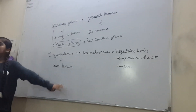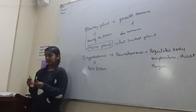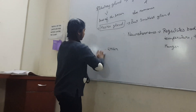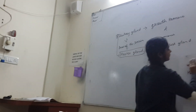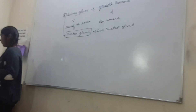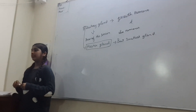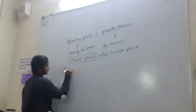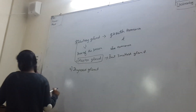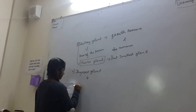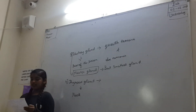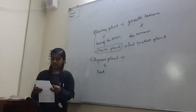The pituitary gland is the smallest gland in the endocrine system, but it is also considered the master of the glands. The fourth gland is the thyroid gland, which is present in our neck. The two hormones secreted by the thyroid gland are thyroxine and calcitonin.